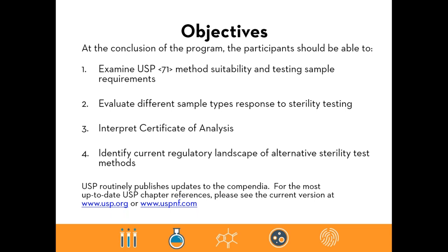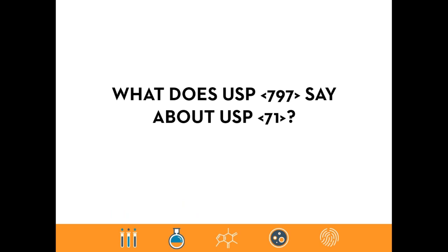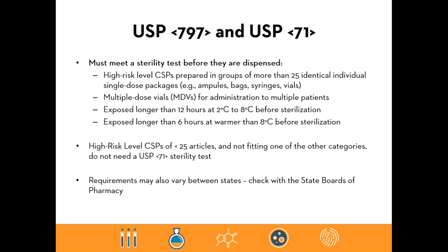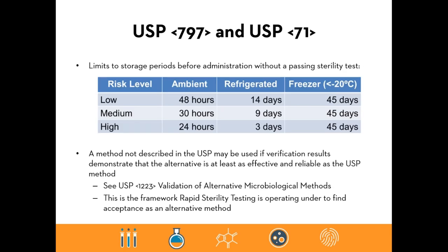First, what does USP 797 sterile compounding say about USP 71? USP 797 gives us the criteria for when we need to conduct a USP 71 sterility test. That includes a high-risk level CSP prepared in groups of more than 25 multiple-dose vials. Those products' exposure time and storage temperature before sterilization must be taken into account. CSPs of less than 25 articles that are high-risk and don't fit other categories do not need a USP 71 sterility test. Also check with your individual state board to ensure it doesn't have more stringent requirements.